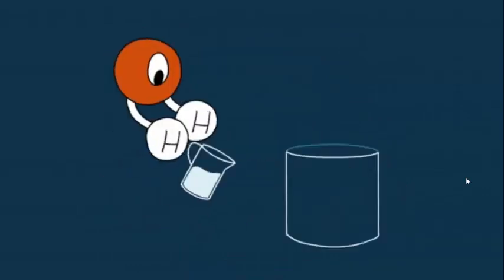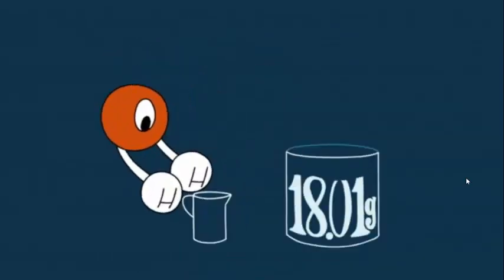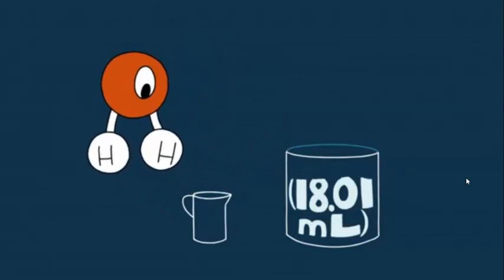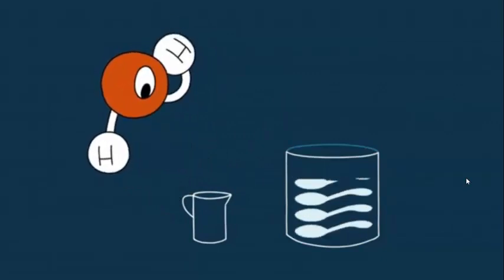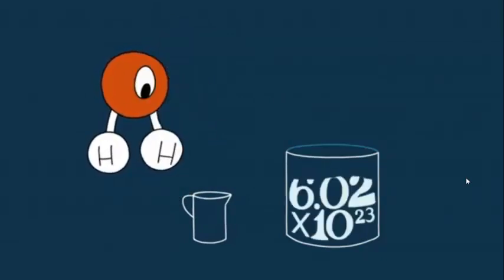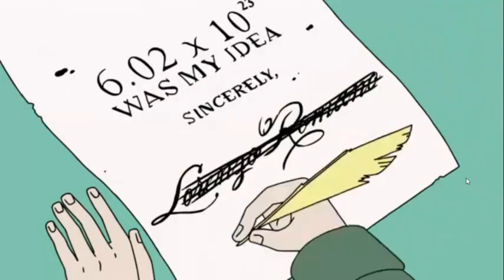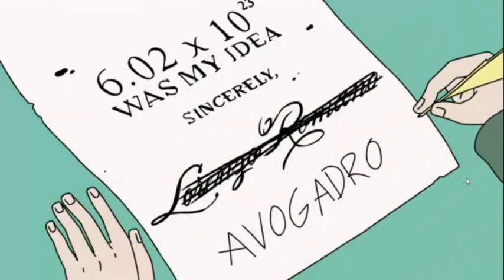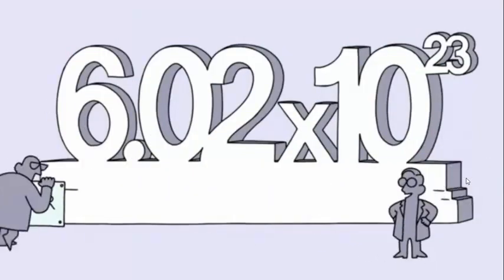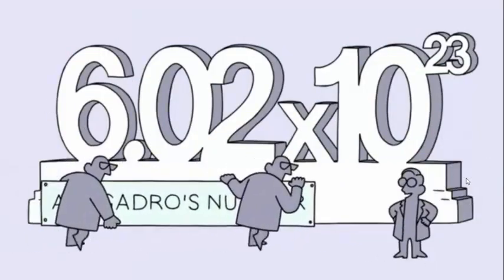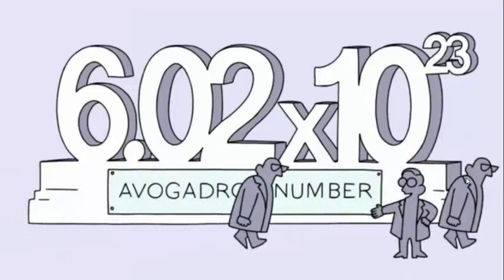Instead, think of water molecules. If you pour 18.01 grams of water into a glass, which is 18.01 milliliters, which is like 3.5 teaspoons of water, you'll have 602 sextillion molecules of water. Since Avogadro was the first one to come up with this idea, scientists named the number 6.02 times 10 to the 23rd after him. It is simply known as Avogadro's number.